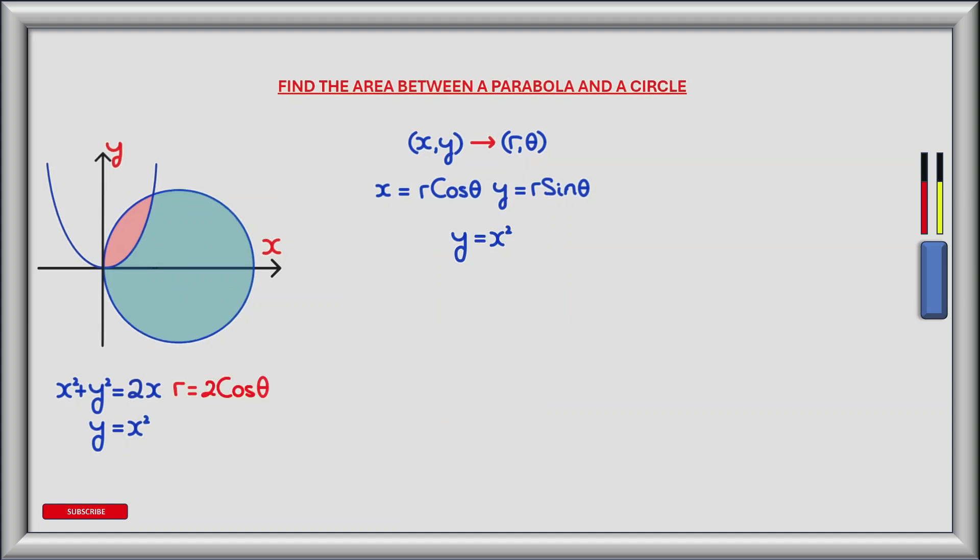For the parabola in Cartesian coordinates we have y equals x squared. Making the substitution for x and y we have r sin theta equals r squared cos squared theta. Dividing both sides of the equation by r and cos squared theta leaves r equals sin theta divided by cos squared theta.